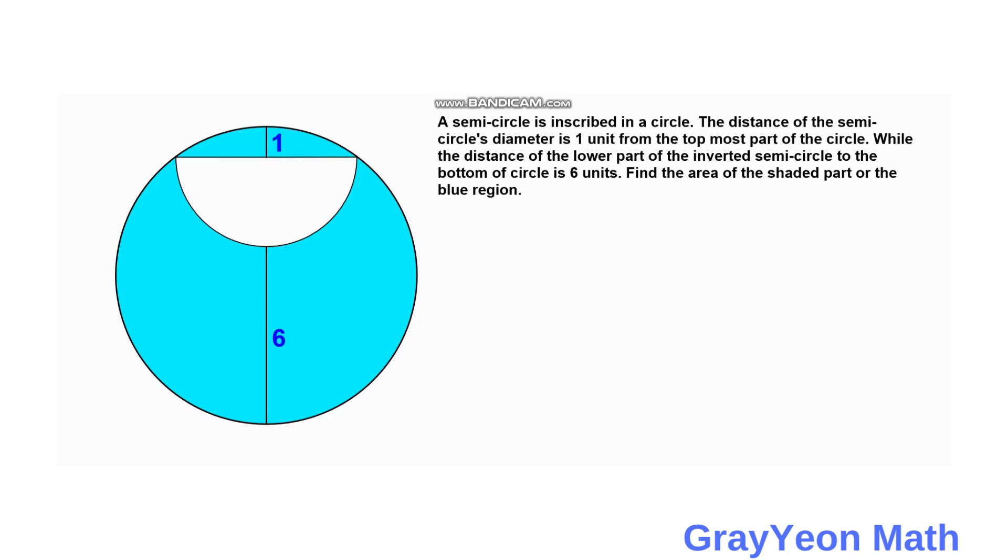Okay, so now going to the solution, the first thing that we have to do is we need to draw a line from the center of the semicircle. And we label this line as R. And since this is a semicircle, these two lines can be labeled as R also.